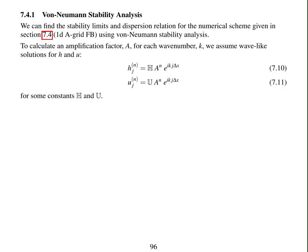We need to calculate an amplification factor A for each wave number k. We assume wave-like solutions for h and u. So we assume that h at position j time level n equals some constant H multiplied by A to the power n times e to the power i k j delta x. And the velocity u is the same, but scaled by a different constant.